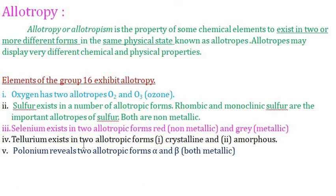The next topic is allotropy. Allotropy, or allotropism, is the property of the same chemical element to exist in two or more different forms in the same physical state, known as allotropes. Allotropes may display very different chemical and physical properties.